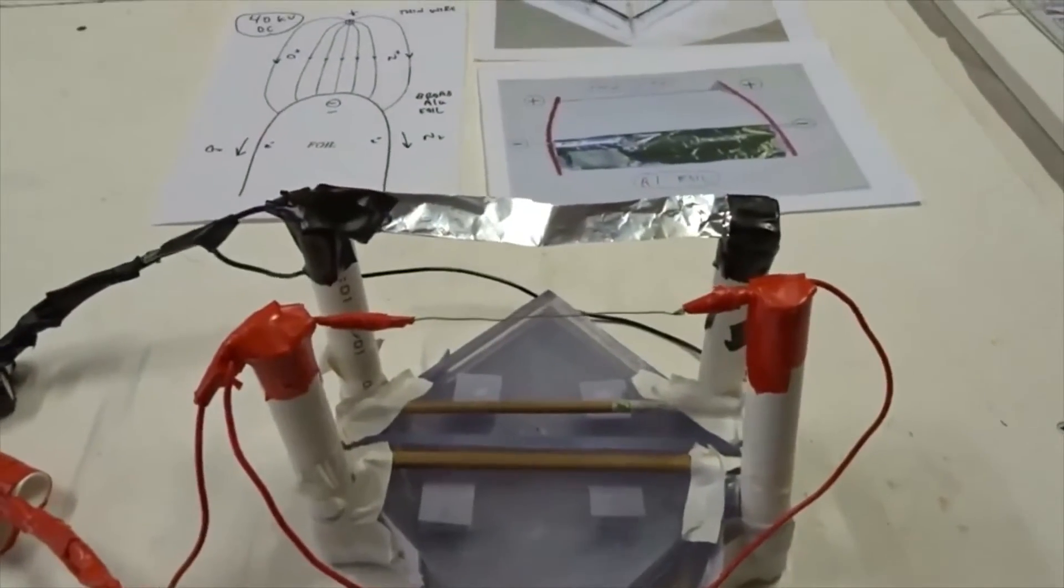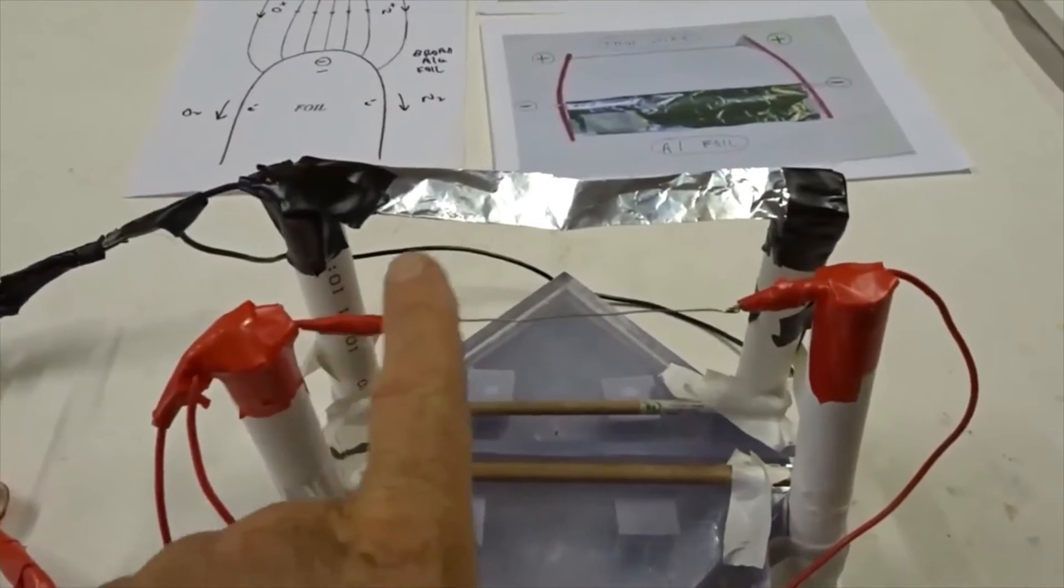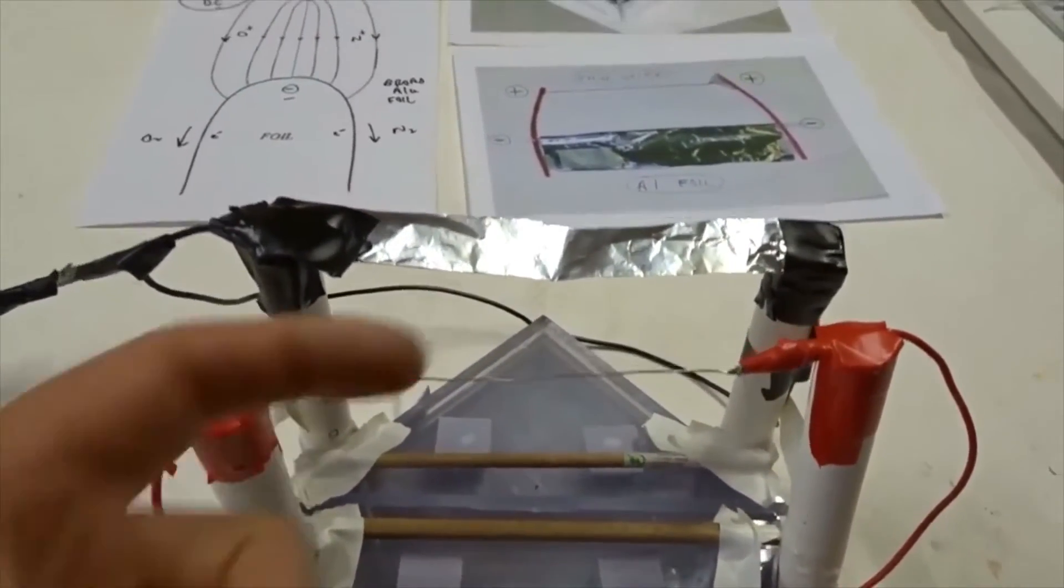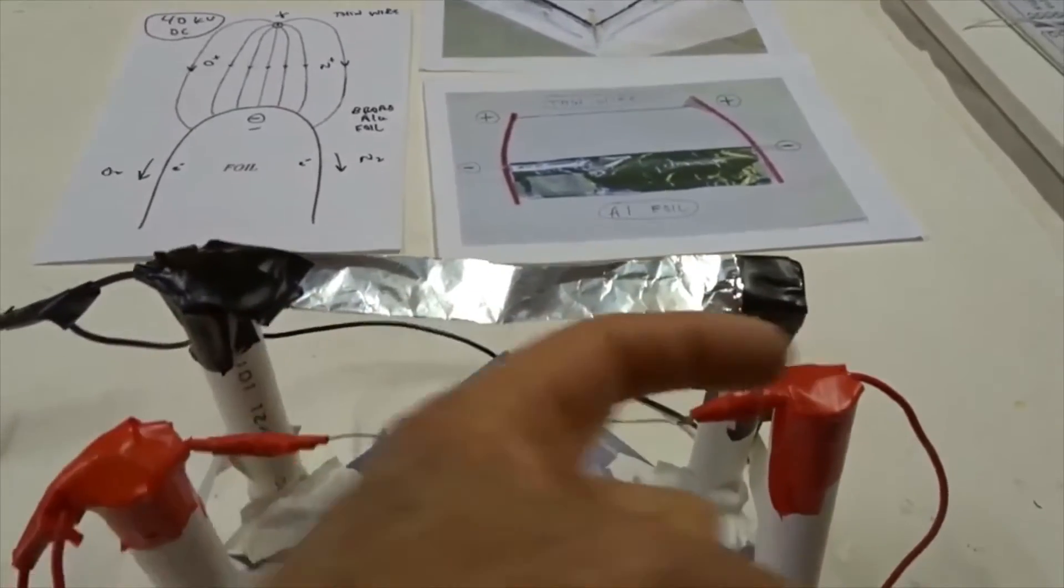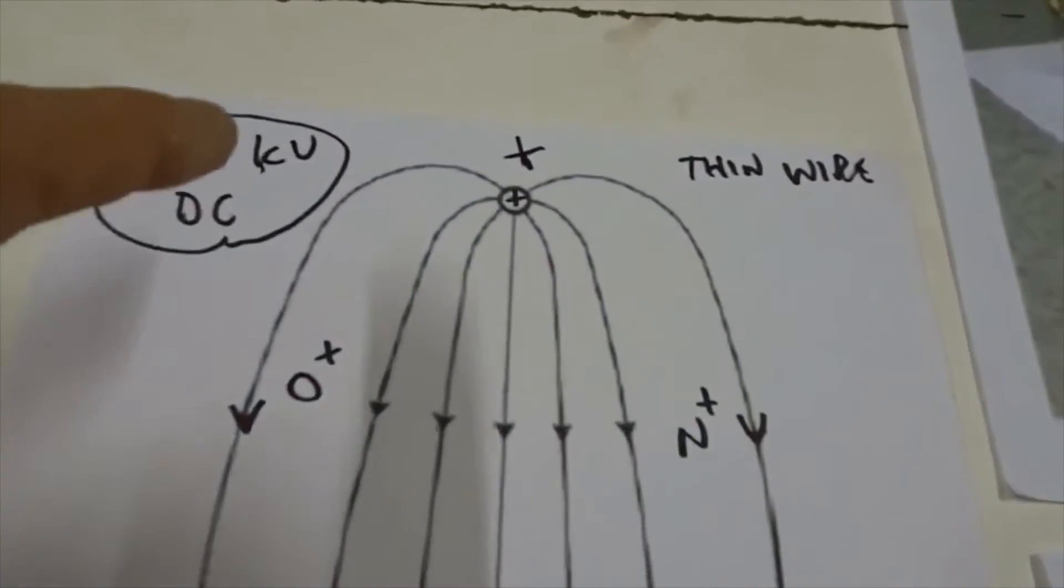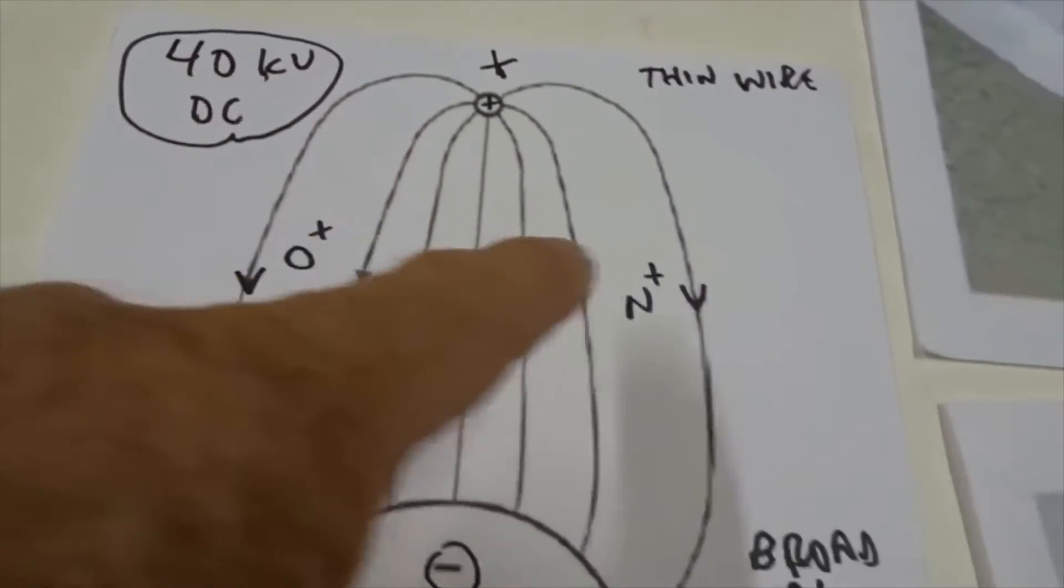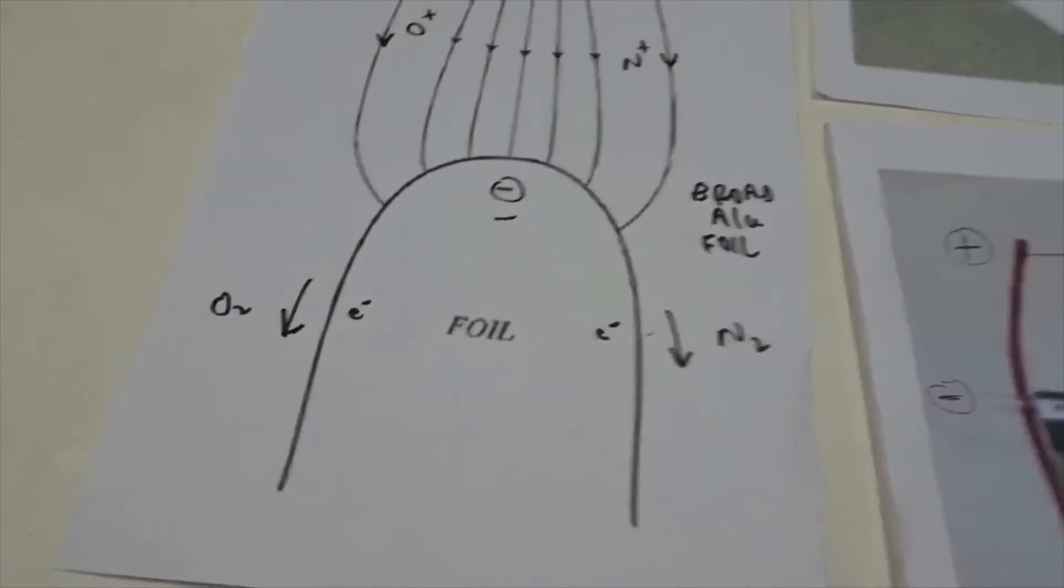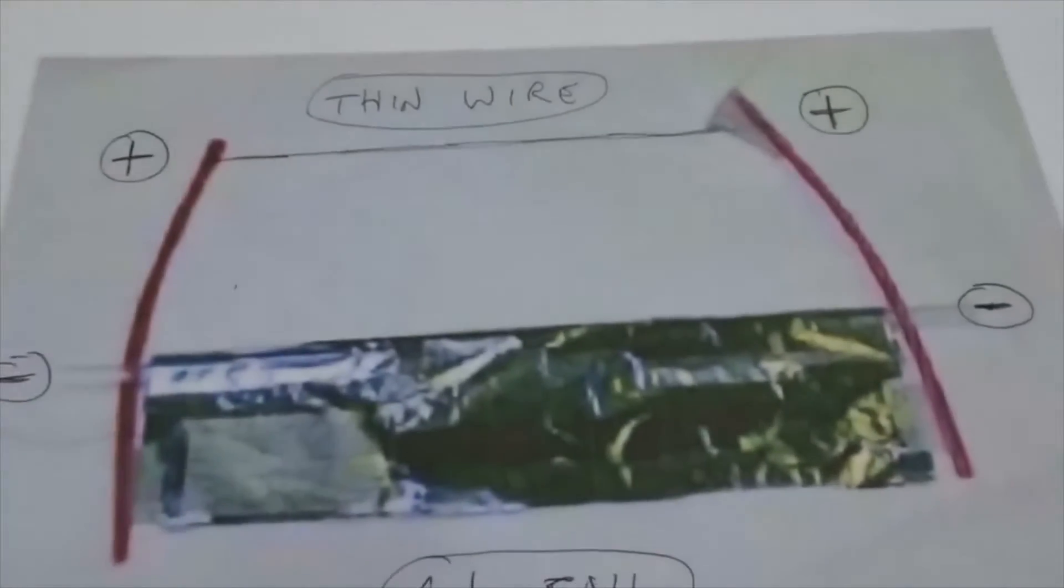So we've learned from these simple experiments that horizontal transfer of ions, which is what a lot of people do, isn't very efficient compared to lengthwise longitudinal flow of ions in terms of the force you get. A lot of people make these ion lifters based on horizontal flow like plus, O plus, N plus, to minus where they recombine to become gas. And that's what these lifters are based on.